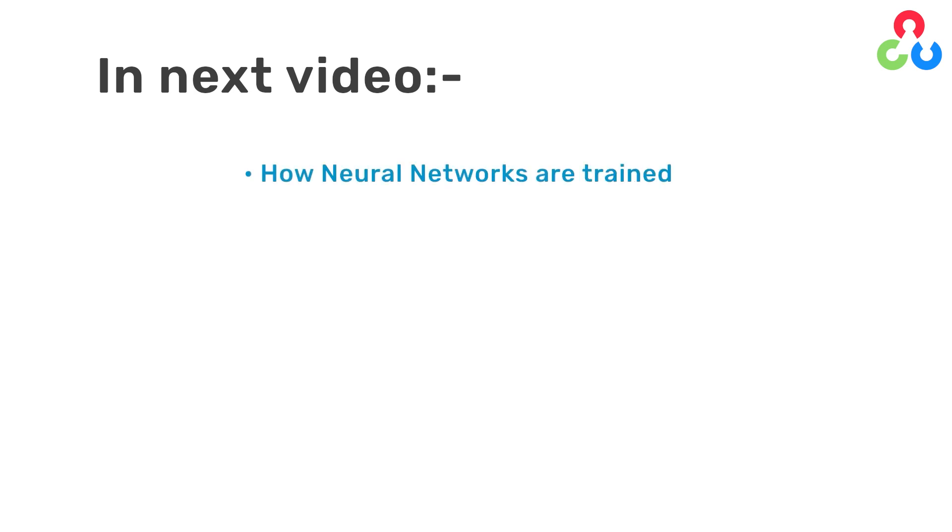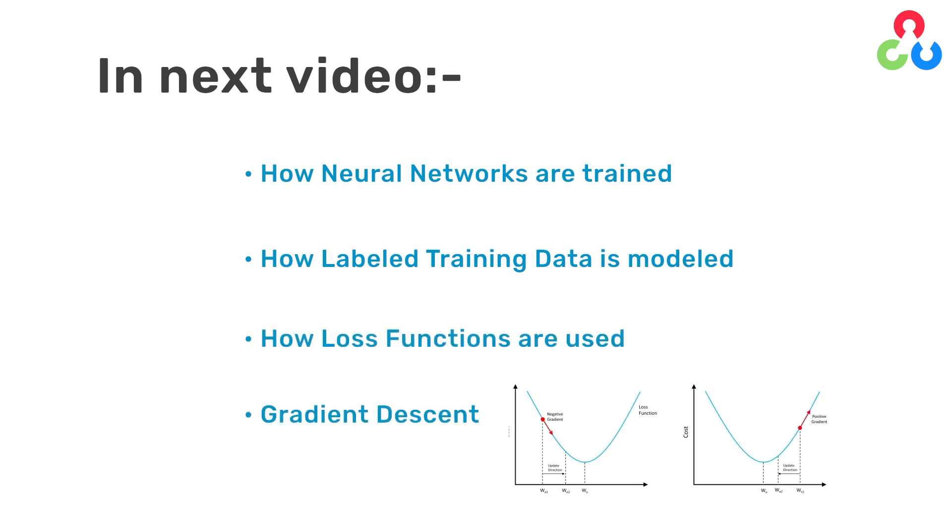In the next video, we'll cover all these details, but conceptually this is the basic idea. We'll delve a little deeper into how neural networks are trained, which includes how labeled training data is modeled, how loss functions are used, and the technique used to update neural network weights called gradient descent.